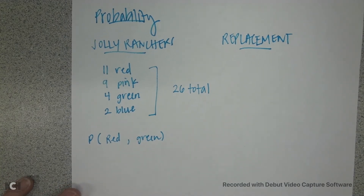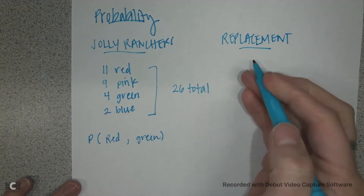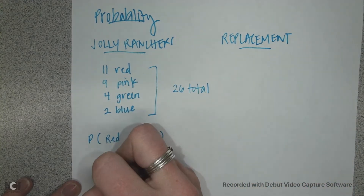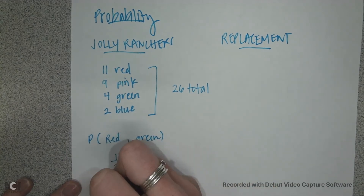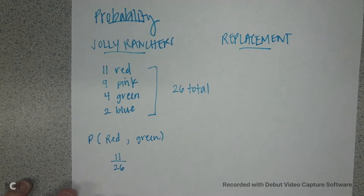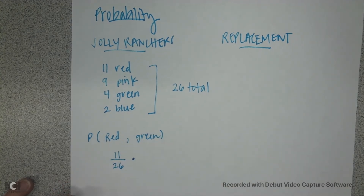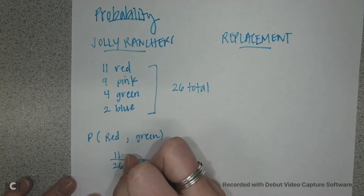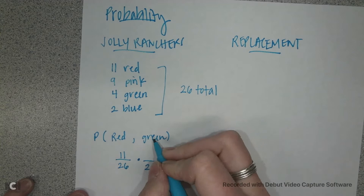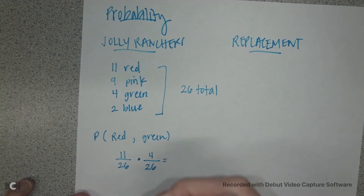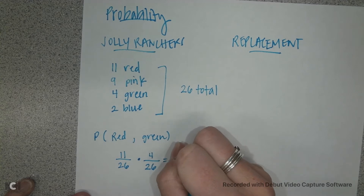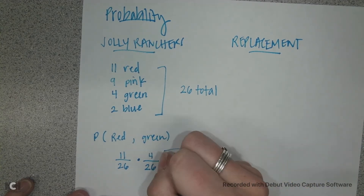I have 26 Jolly Ranchers and I'm trying to figure out the probability of getting a red and then a green with replacement. There are 11 red out of 26 total. When you say 'and then,' we multiply the next probability. Since I've replaced it, my total is still 26, and there are 4 greens. When I multiply I get 11 over 169, and that does not reduce — that is my probability of pulling a red and then a green.